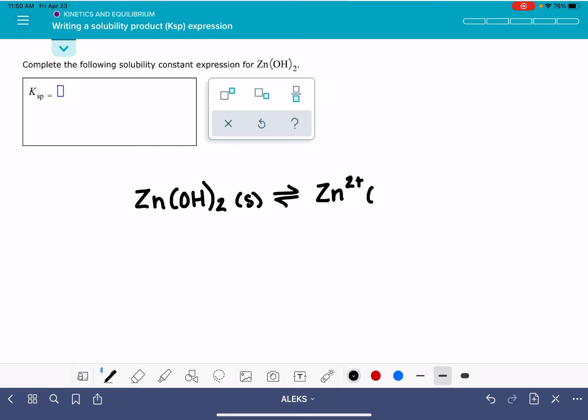My cation is zinc with a 2+ charge, and that's going to be aqueous. And then my anion is the OH⁻ hydroxide anion. OH⁻, this subscript 2 is letting me know that I have two of those, and that's also aqueous.